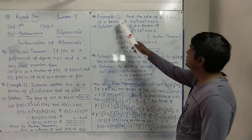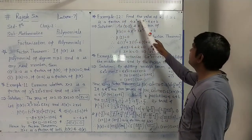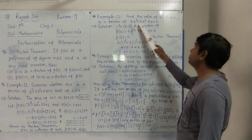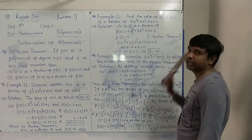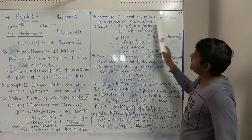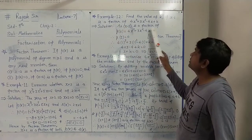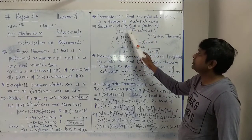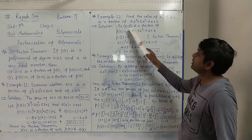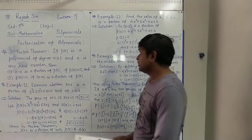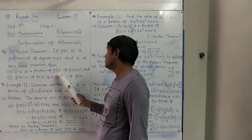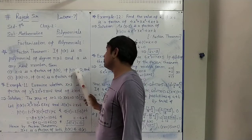One more example: Example 12. Find the value of k, if x minus 1 is a factor of 4x cubed plus 3x squared minus 4x plus k. So in this expression, it is given that x minus 1 is a factor of P(x) equals 4x cubed plus 3x squared minus 4x plus k.